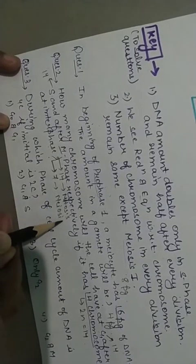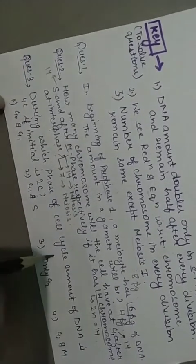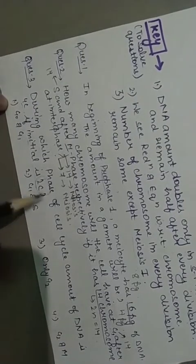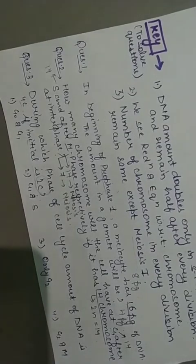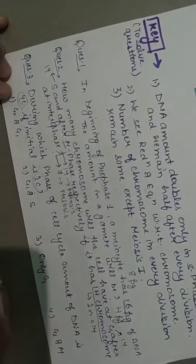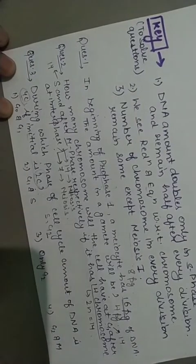During which phase of cell cycle amount of DNA is 4c if initial is 2c? Initial 2c bola hai, to kis phase ke andar 4c ho ga? To 4c kis stage ke andar hota hai? Ya to S ke andar rahta ya G2 ke andar rahta hai.